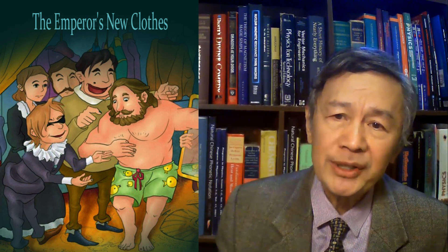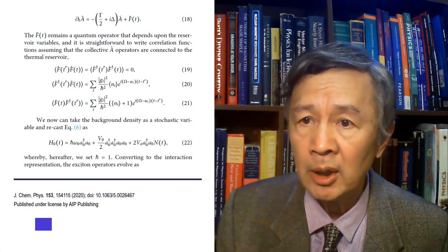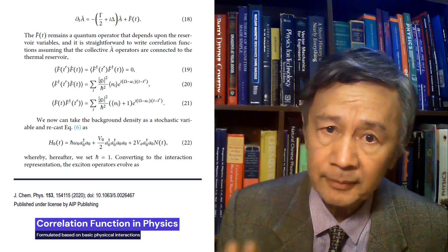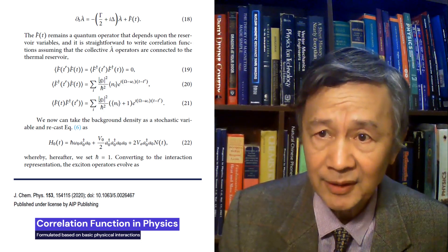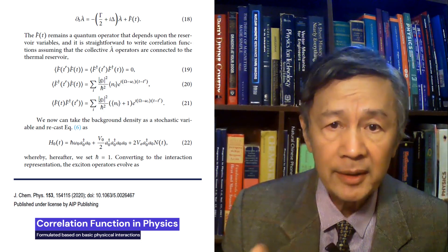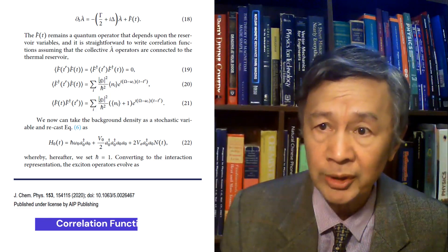By way of contrast, all of the correlation functions used in physics — both auto-correlation and cross-correlation — are directly derived from basic and identifiable interactions, such as magnetic couplings in my research field of magnetic resonance and dynamic nuclear polarization transfer, called DNP. These can be calculated from the spin Hamiltonian. I will discuss this issue in detail for specialists.